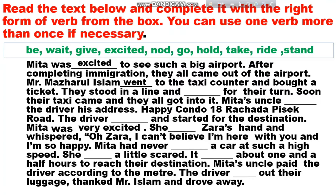After completing immigration, they all came out to the airport. Mr. Madhuru went to the taxi counter and bought a ticket. They stood in a line and waited for their turn. Soon their taxi came and they all got into it. Nita's uncle gave the driver his address — Happy Condo — and the driver nodded and started for the destination.